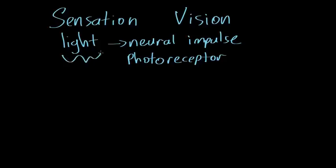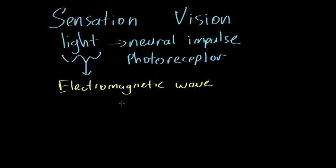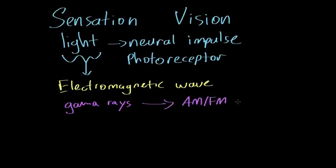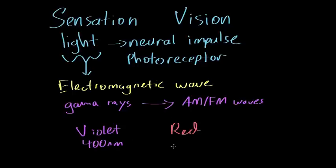Let's focus on the light first. Light is an electromagnetic wave that is part of a large spectrum called the electromagnetic spectrum. It contains everything from gamma rays and X-rays all the way to AM and FM radio waves. Visible light falls in the middle, ranging from violet at a wavelength of about 400 nanometers all the way to red at about 700 nanometers.